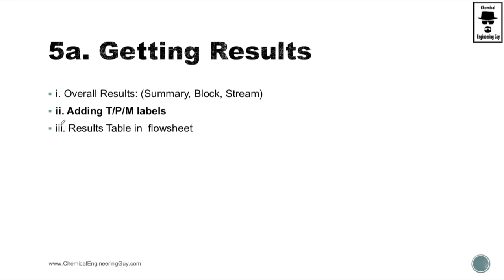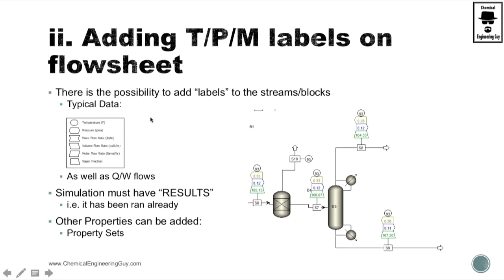Let's talk about adding TPM and many other labels on the flowsheet. This is very useful, especially if you are analyzing certain or specific properties. For instance, if you are analyzing a distillation column, maybe you want to analyze the distillate rate versus the bottom rate.